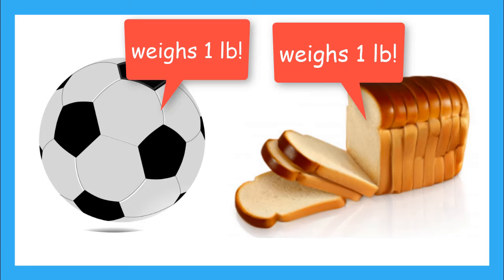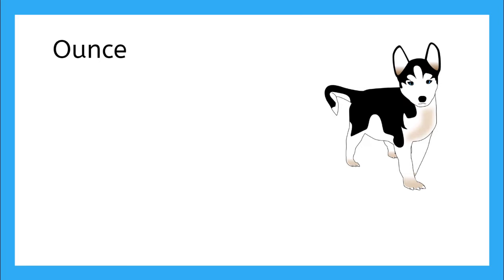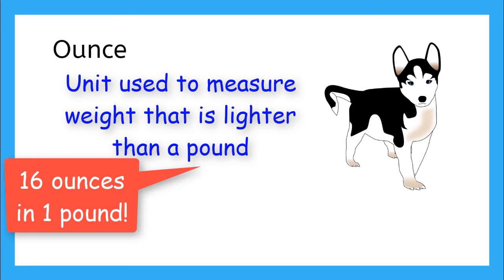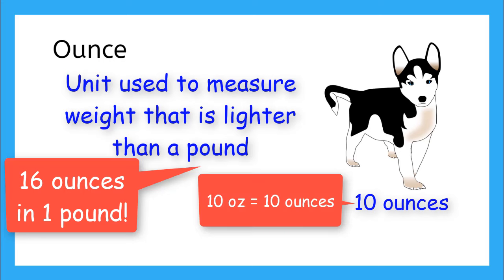Now what makes up a pound? We have another unit for weight called ounces. An ounce is lighter than a pound. In fact, there are 16 ounces in one pound. For example, when my dog was born, he weighed 10 ounces. We can use the abbreviation OZ for ounces.